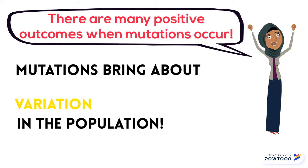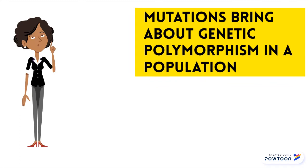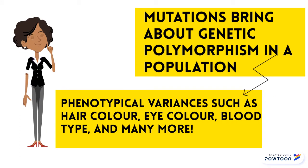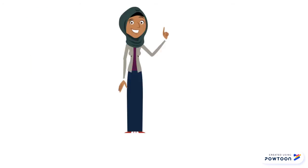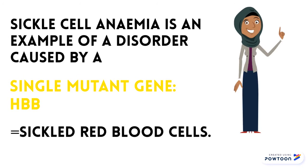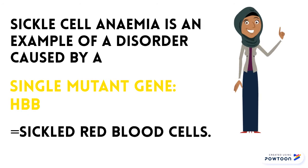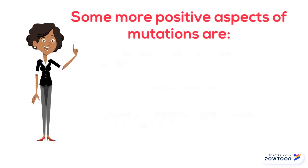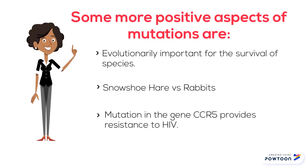Mutations can bring about genetic polymorphisms in a population, and we see these phenotypical variances such as differences in hair color, eye color, blood type, and much more. Sickle cell anemia is a disorder caused by a single mutant gene that leads to the production of sickle red blood cells. In many African tribes, people with sickle cell anemia suffer from malaria less frequently than those who do not have sickle cell anemia.